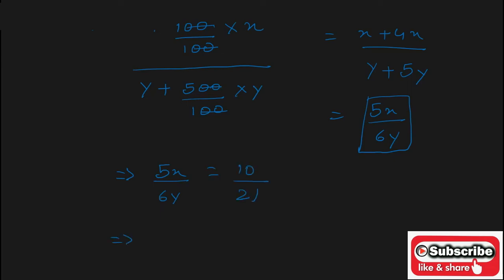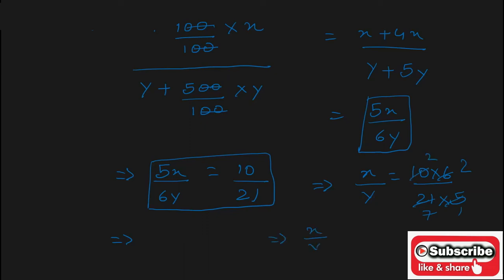We have to find the value of x upon y. Cross multiply the terms of LHS with the terms of RHS, giving 10 into 6 upon 21 into 5. Simplifying, x upon y is equal to 4 upon 7.